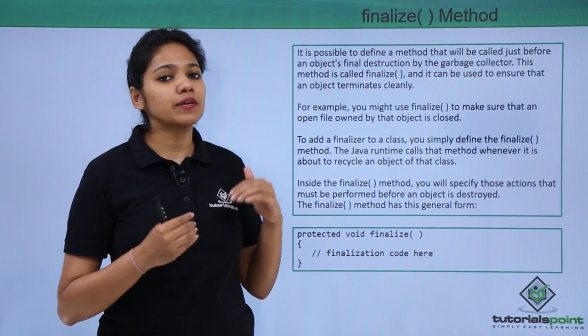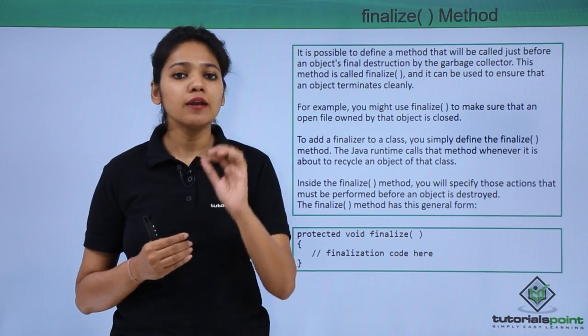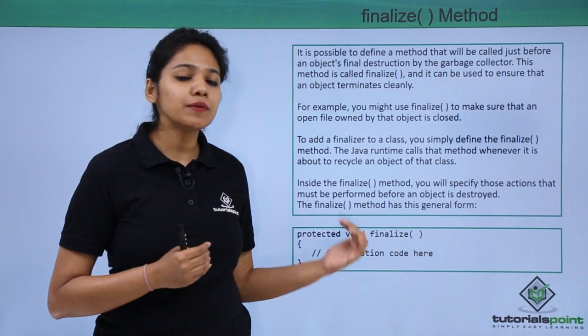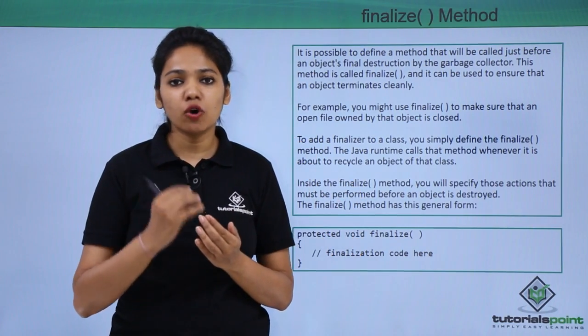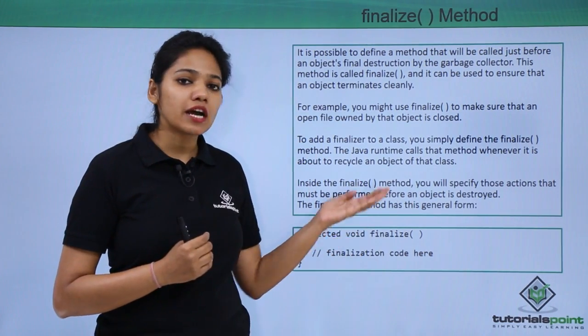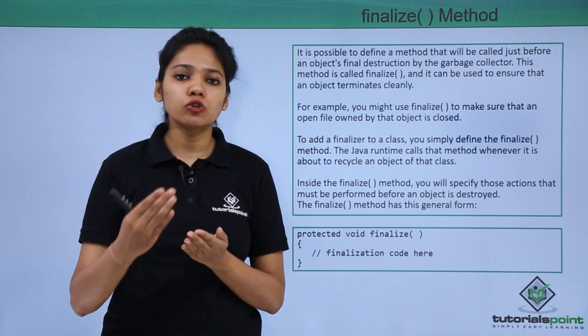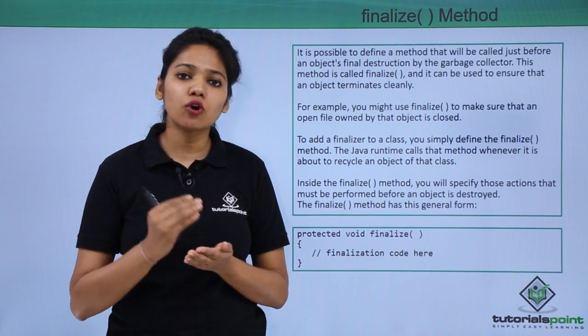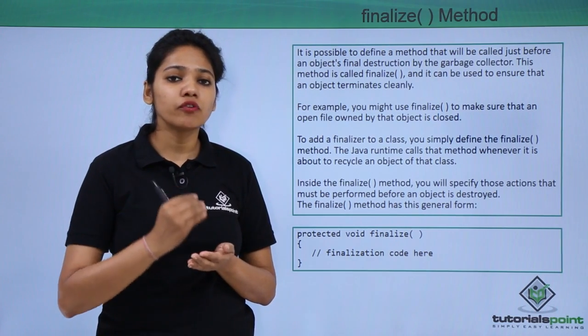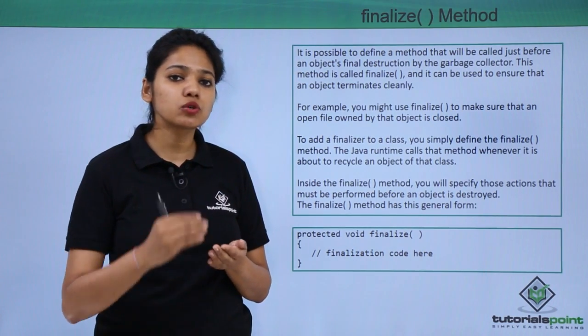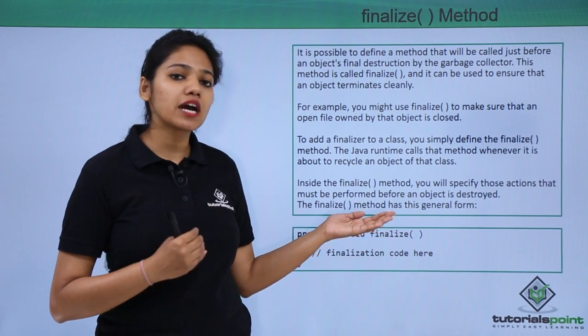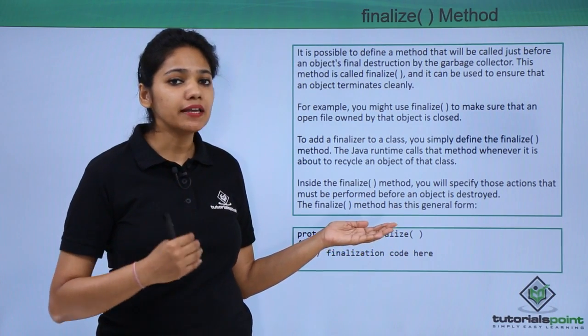A finalize method is normally called before a garbage collector can reclaim an object. Therefore, before a garbage collector call, we can call a finalize method if you want to close certain connections or resources by yourself, or if you want to write certain programs to close this connection before a garbage collector calls by itself.